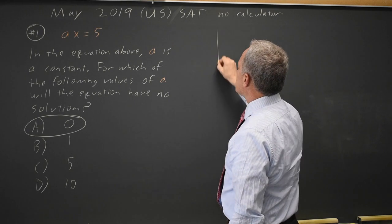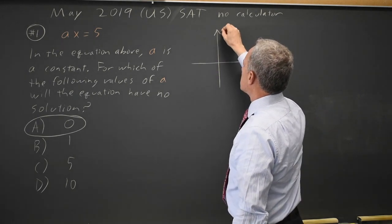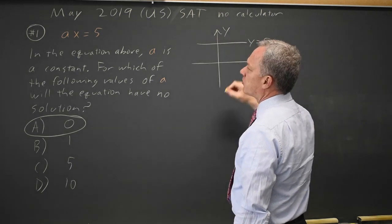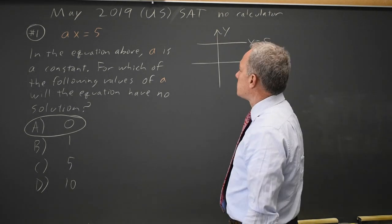Another way to look at this is in the xy plane. The right side is y equals 5. If you graph the left side, y equals ax.